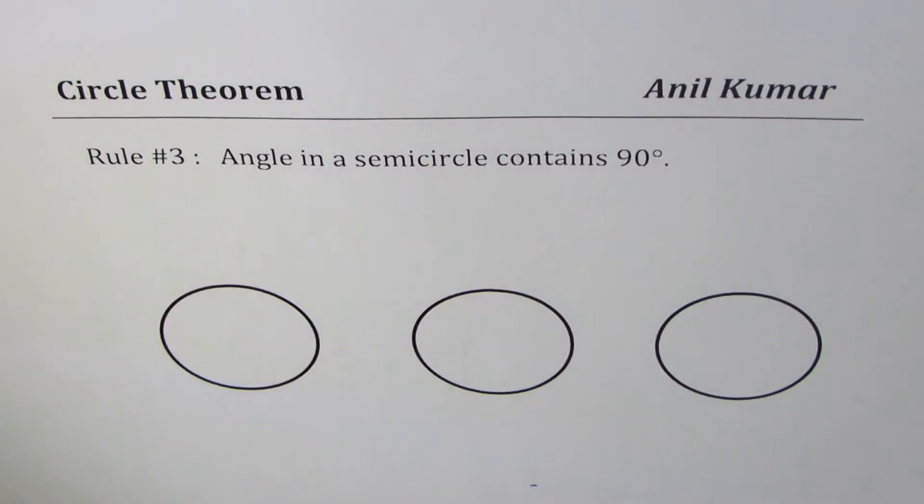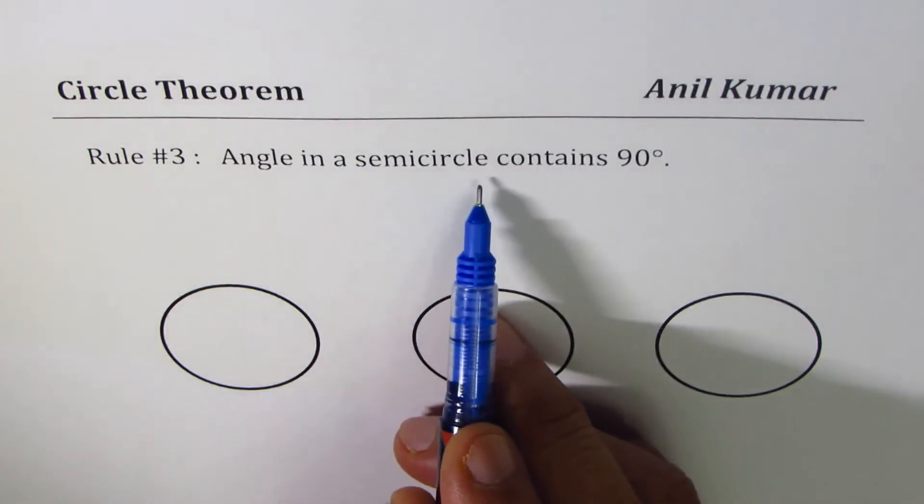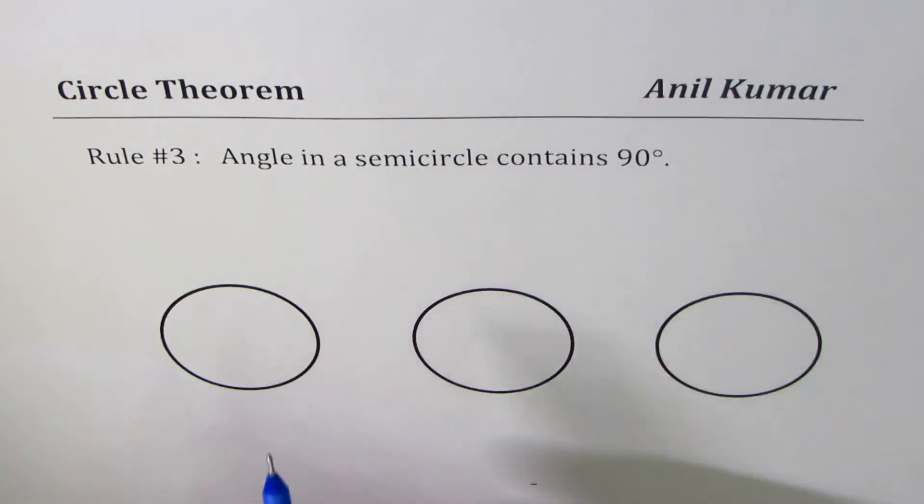I am Anil Kumar. To help solve questions related to circle theorem, we'll now understand another rule which relates to angle in a semicircle. Rule number three: Angle in a semicircle contains 90 degrees.